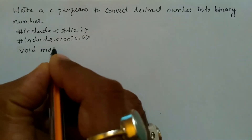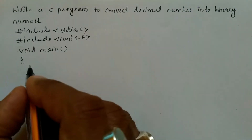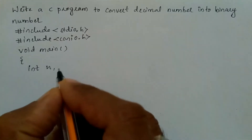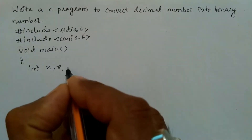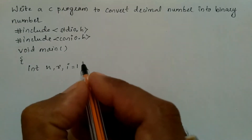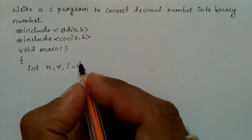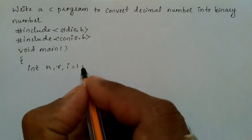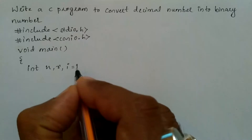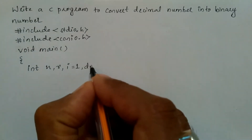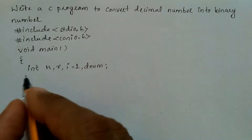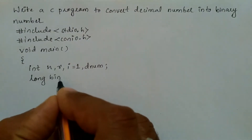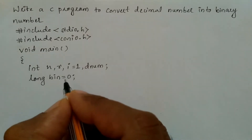Now we'll write the main function — void main with opening curly brace. Here we declare all variables with their respective data types: integer n for the entered number, r for remainder, and i initialized to 1 which is used for multiplication. Next is denum for decimal number. Then we take a long modifier and declare bin, the binary variable, initialized to zero.